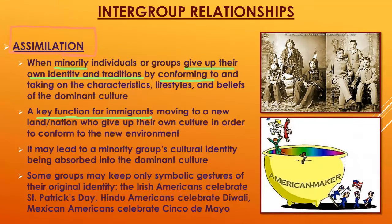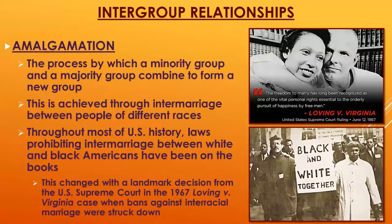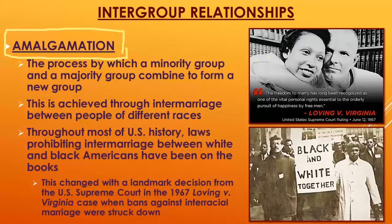Assimilation can lead to the minority group's cultural identity being absorbed into the larger dominant culture. Amalgamation is the third category — when society accepts that a minority group and majority group can combine to form a new group, essentially achieved through intermarriage and procreation between people of different races.